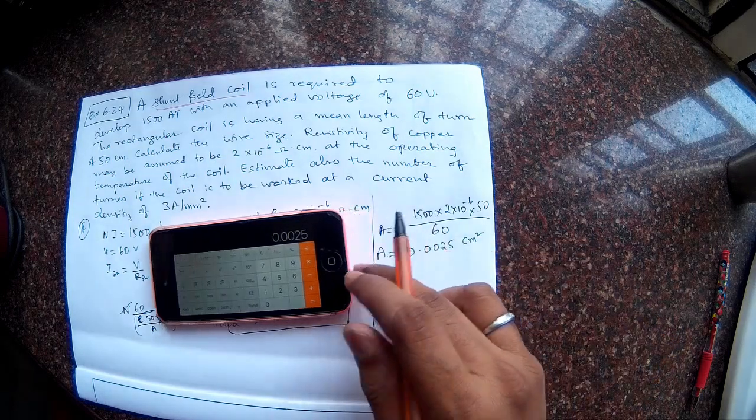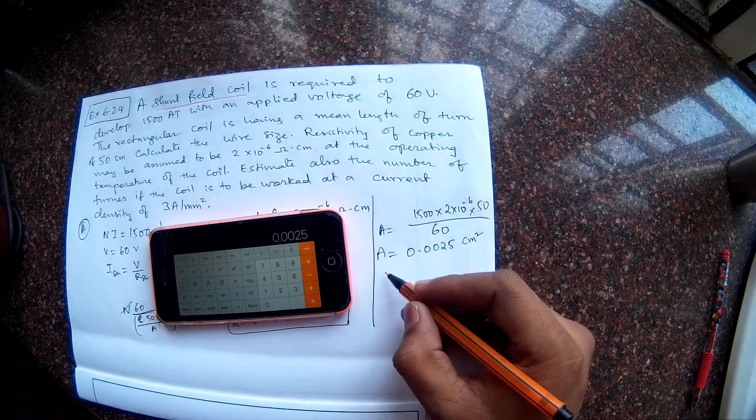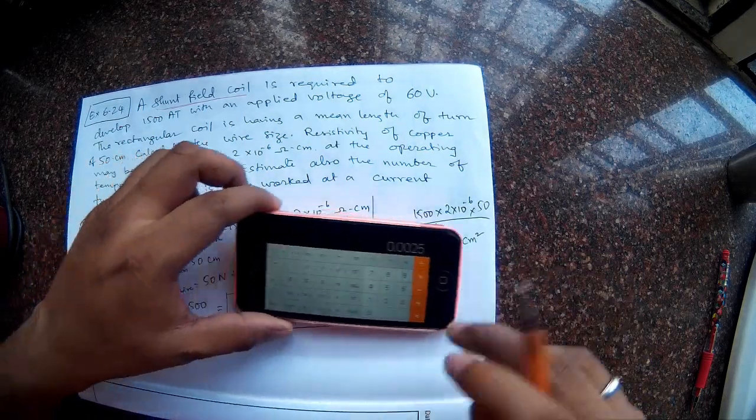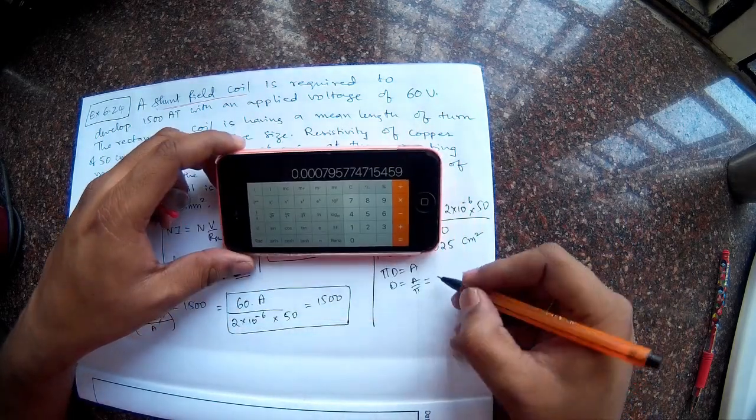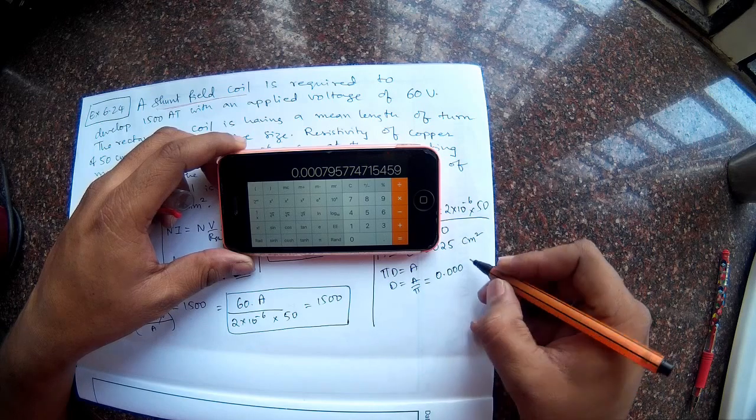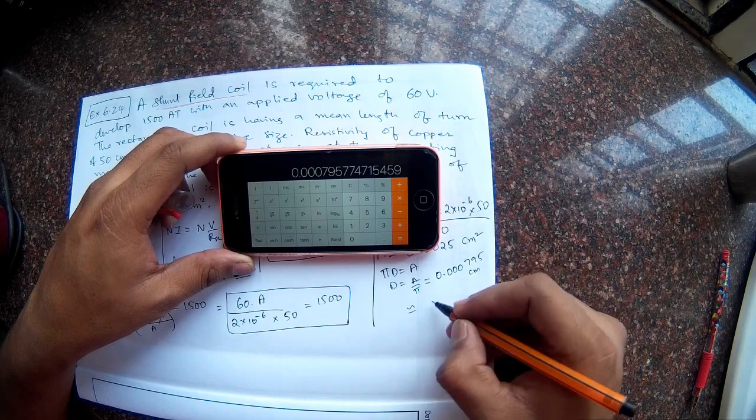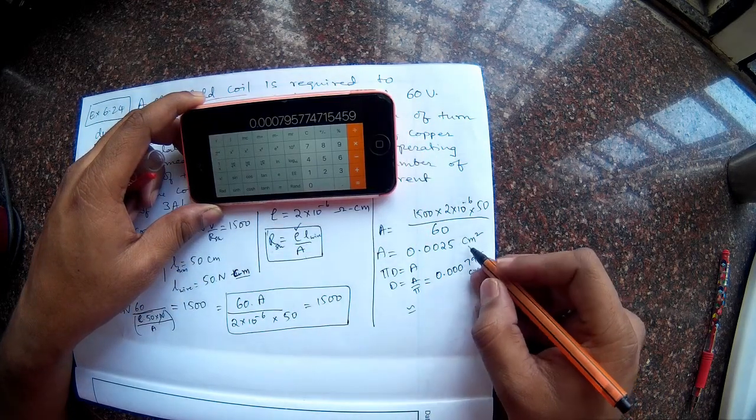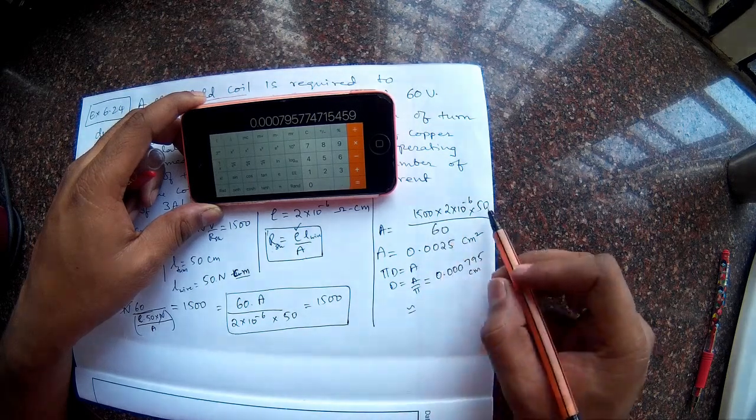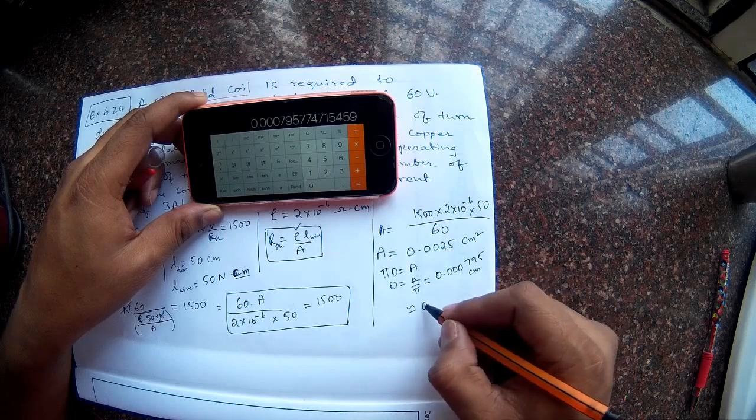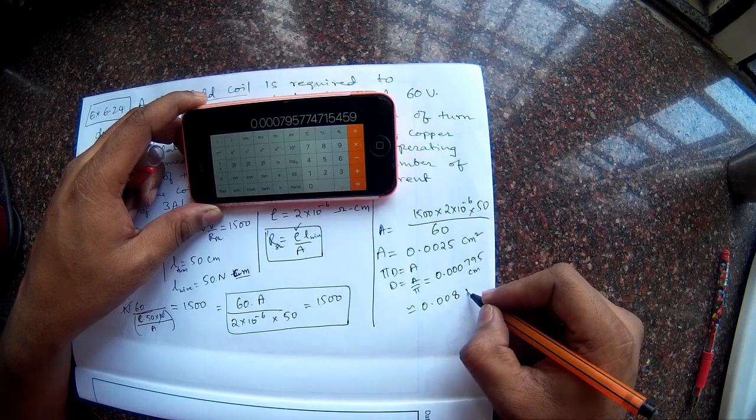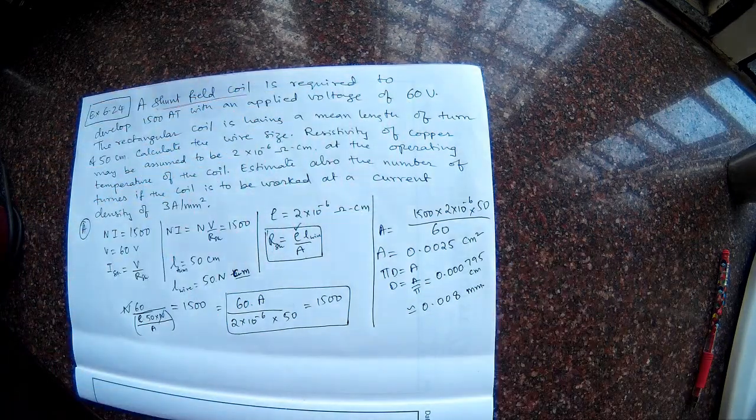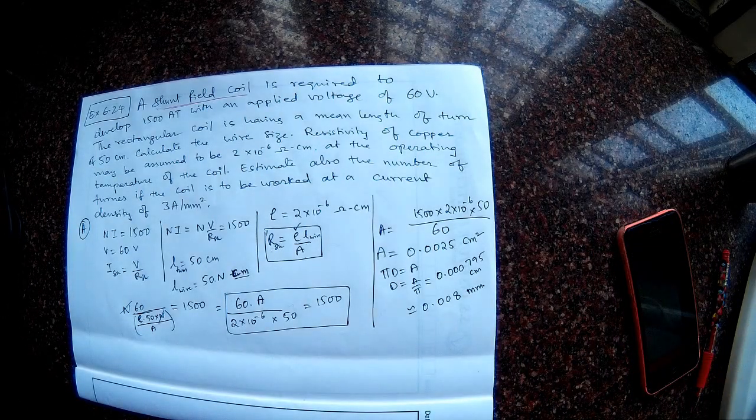Now this is the area of cross section. And so if the wire will be a circular wire, so pi D is nothing but A. So therefore D is A by pi. So if I just divide this number by pi, so I get 0.000795. This is in centimeters. So I will approximate. Or is it really centimeter squared? Let's verify the units later. So I get 0.008 mm. That looks like an awfully thin wire. Let me just pause here for a while. I will just verify the answer and come back.